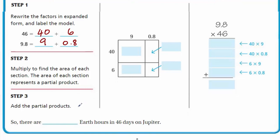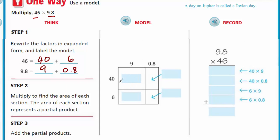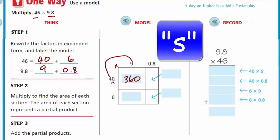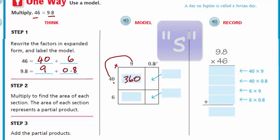Step two: Multiply to find the area of each section. The area of each section represents a partial product. This is the area model. If I were to take 9 times 40, I can find out the area and that's going to be 360. That's like nine times four is 36. We have one more power of 10 there.